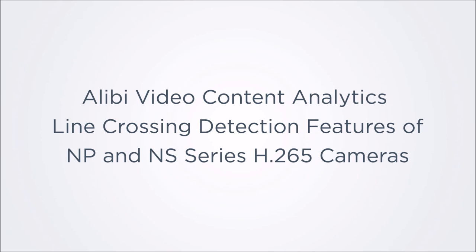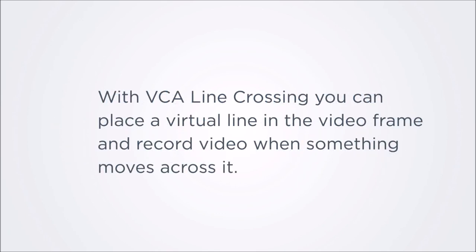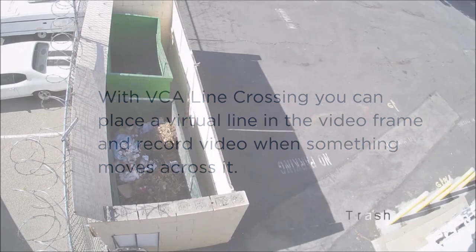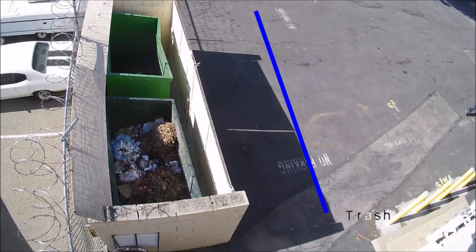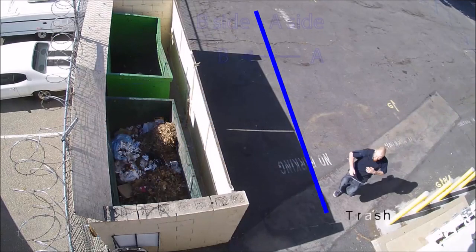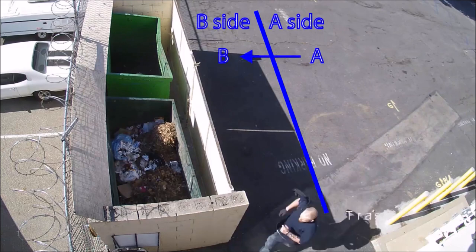Welcome to the tutorial for using the Alibi Video Content Analytics Line Crossing detection features of NP and NS Series H.265 cameras. With the Alibi Video Content Analytics Line Crossing, you can detect when objects move across a virtual line anywhere in the video frame and record video of it. You can configure line crossing to detect if an object moves across the line in just one direction, such as from the A side to the B side or from the B side to the A side, or crosses the line in either direction. You can also set the sensitivity of the detection.